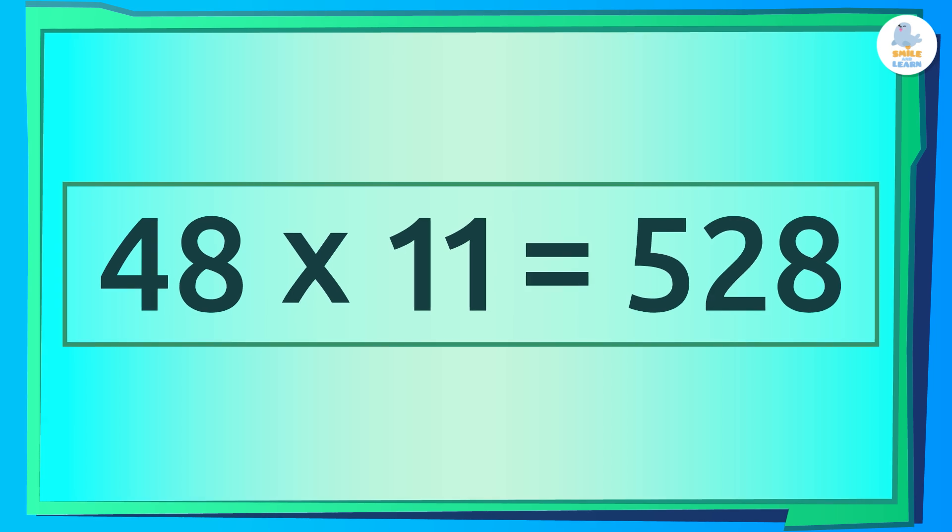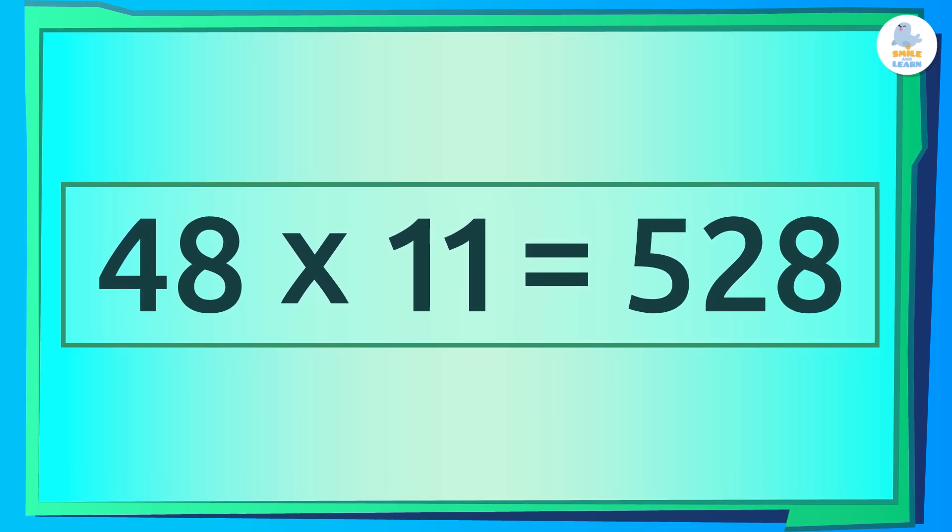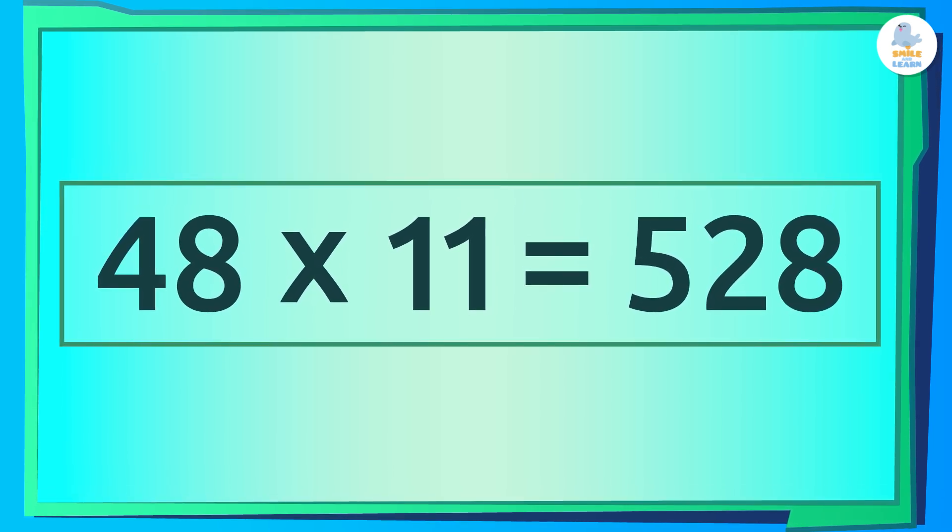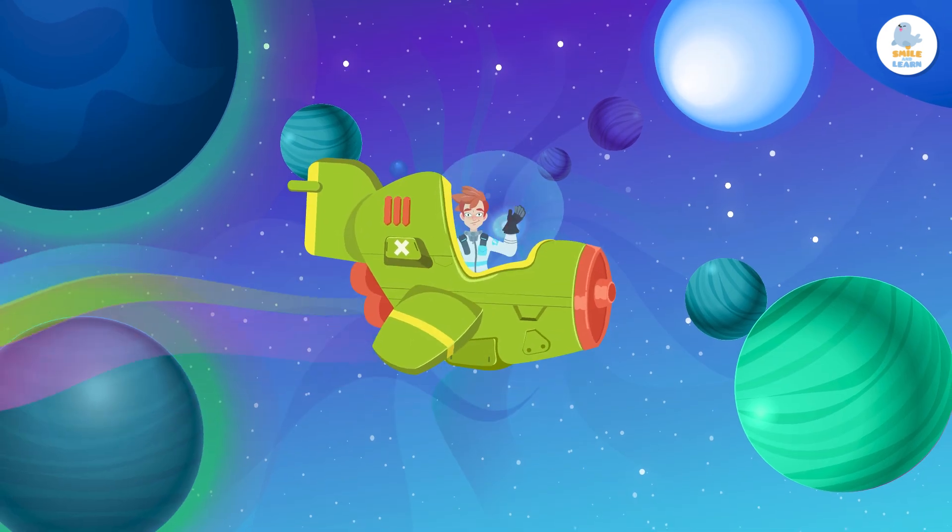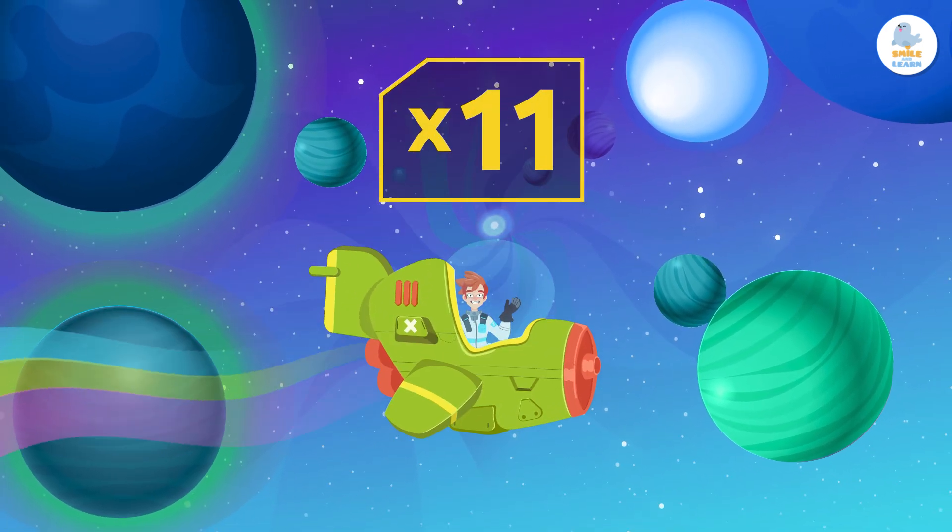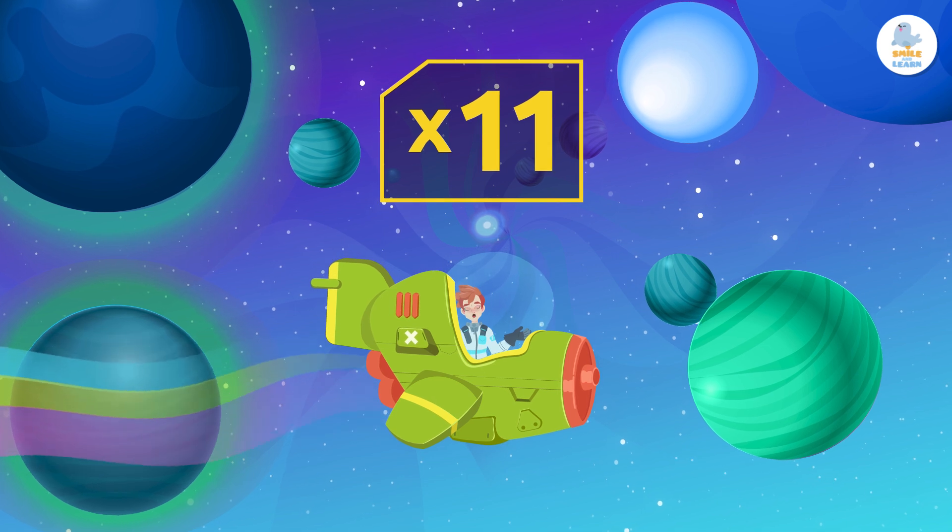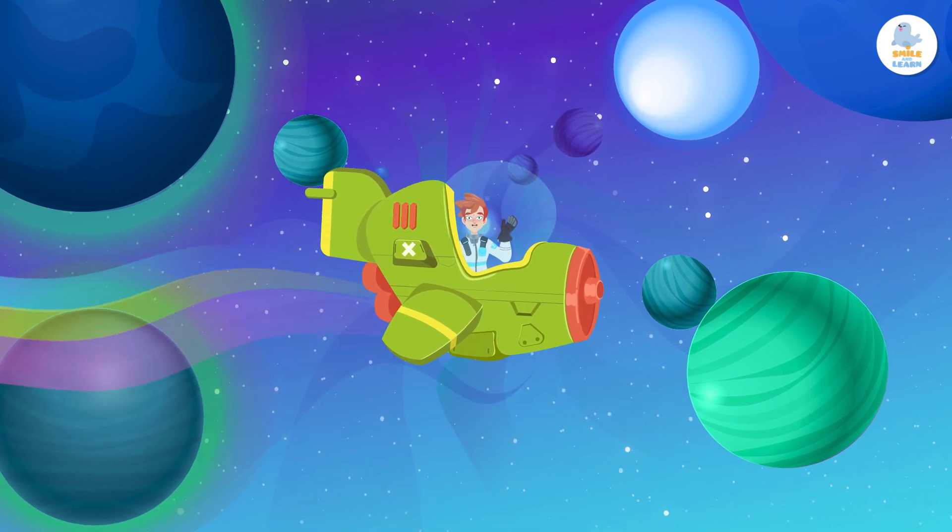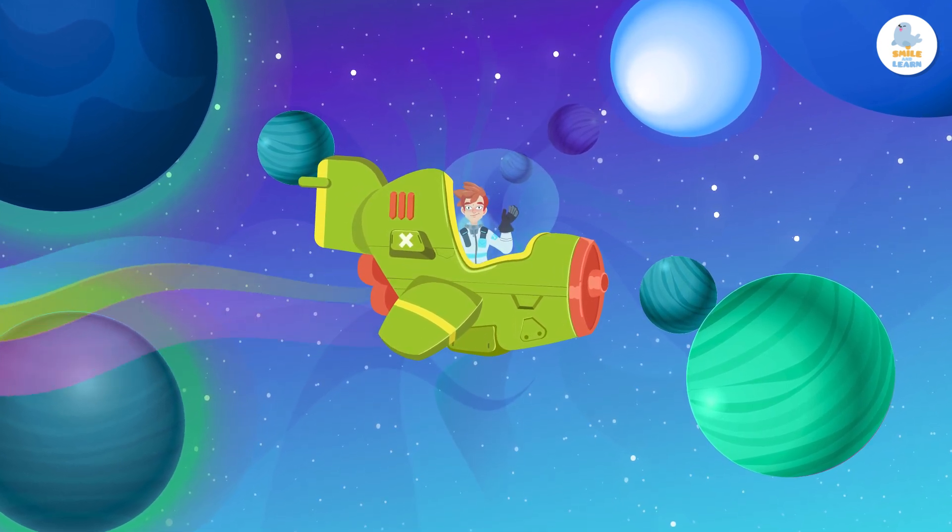So, 48 times 11 is 528! Very nice! Great! Now you know how to multiply by 11, quickly and easily. Use these tricks whenever you need to do operations like this.